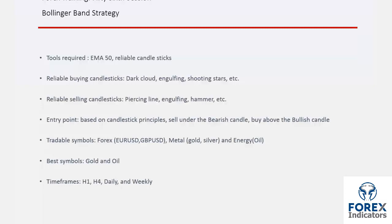Bollinger Band can be exploited on all symbols if they have an upward or downward trend, especially on Euro against US Dollars, British Pound against the US Dollar, Gold, Silver, and Oil. However, the most appropriate symbols for this method are Oil and Gold.